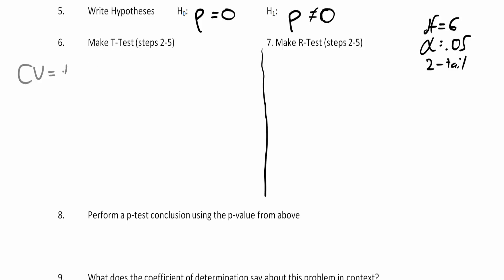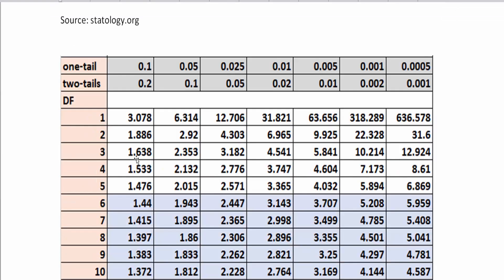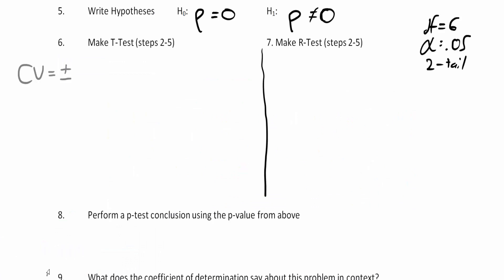Since we're doing a two-tail test we need plus or minus critical values. Let's look up 6 degrees of freedom at 5% on the two-tail t-chart. Here we are — 6 degrees of freedom, two-tail, 5% alpha — and this gives us a critical value of plus or minus 2.447. Your test statistic needs to be beyond plus or minus 2.447 standard deviations, otherwise we do not reject the null hypothesis. Our t-value from the calculator was negative 0.724.